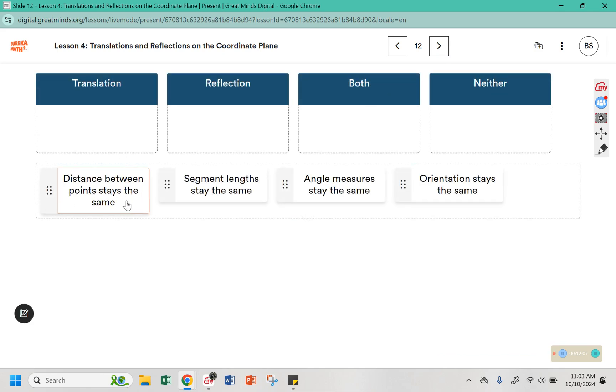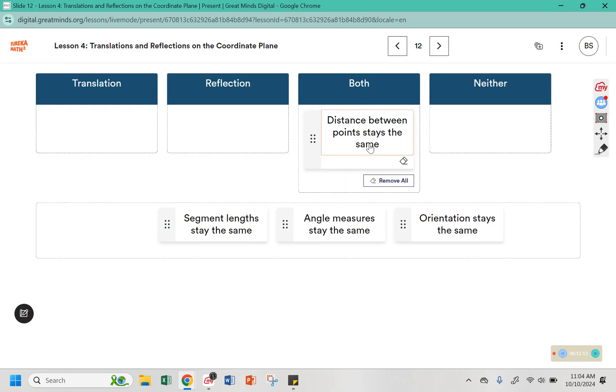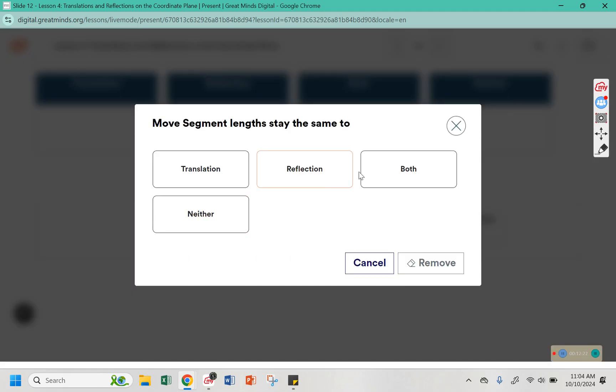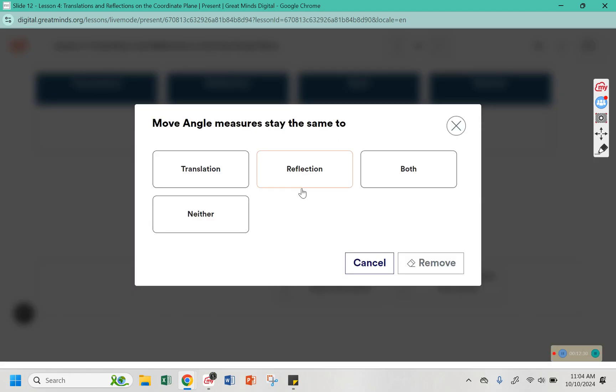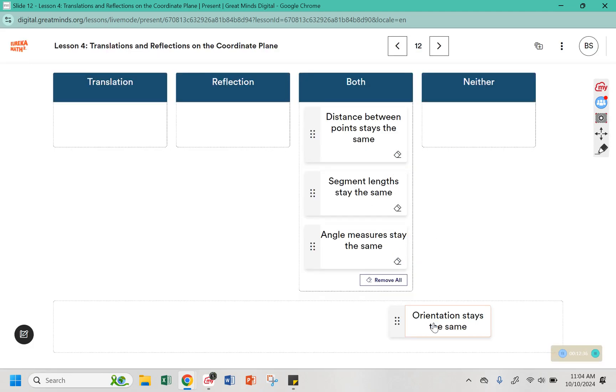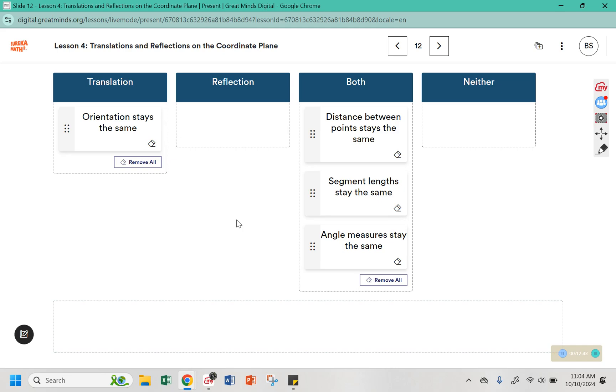Alright, the distance between points stay the same. That's true for both. It's actually true for all rigid motions. It includes rotations as well, but we'll get to that in another lesson. Segment lengths stay the same. This is also true for both. They might get moved around, but their lengths stay the same. The angle measures stay the same in both as well. The orientation stays the same. That means it's facing the same direction, but in a different location. So the orientation only stays the same in a translation. In the reflection, the orientation is flipped.